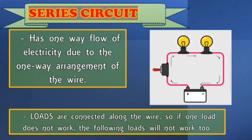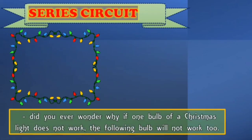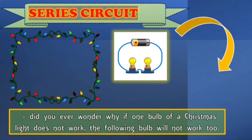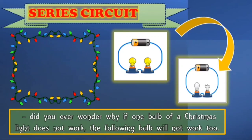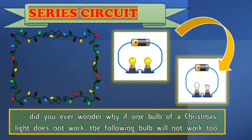Ibig sabihin, kapag nasira or nabasag yung isang bulb, it will not work the other bulb too. So this is the reason why electricity will not be able to flow to the other loads in a series circuit. The best example of this is the Christmas light. Did you ever wonder why if one bulb of a Christmas light does not work, the following bulbs would not work too? So dito sa series circuit class, kapag nasira na yung isang bulb, totally all of them ay damay-damay na — it's because they have only one path. Isa lang ang path na dinadaluyan ng kuryente sa kanila.